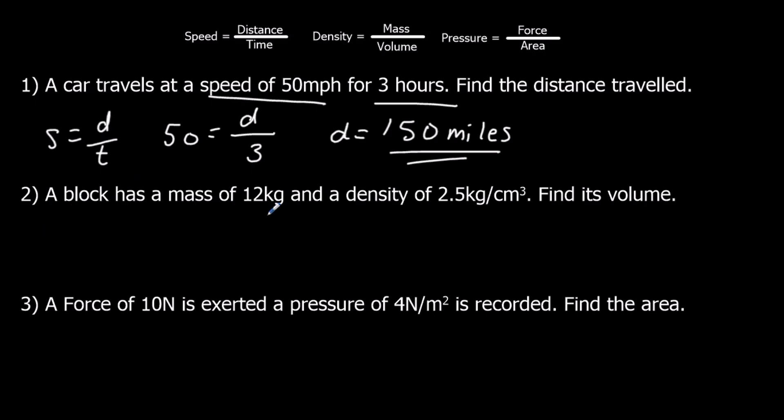A block has a mass of 12 kilograms and a density of 2.5 kilograms per centimeter cubed. Density is mass over volume. Density I know, 2.5. Mass I know, 12 over V. I need to find V, so I'm going to times by V, which will give me 2.5V equals 12.